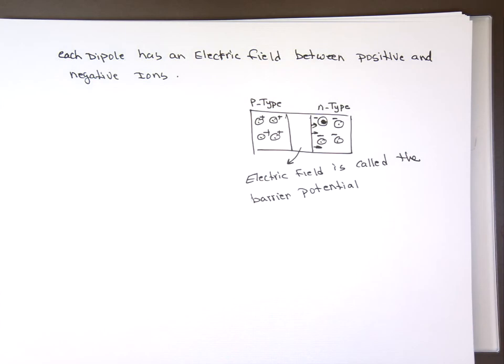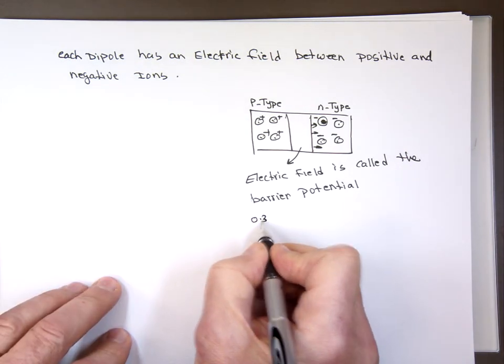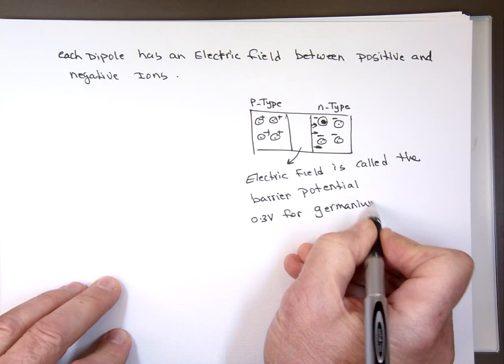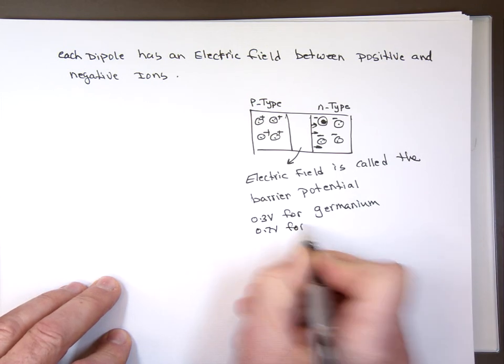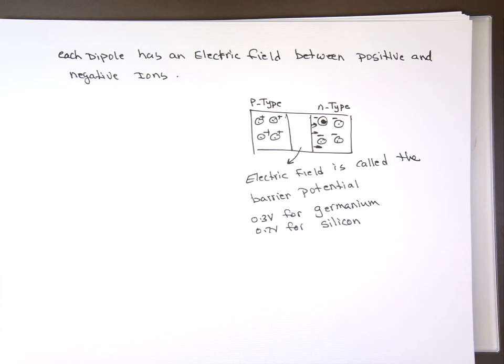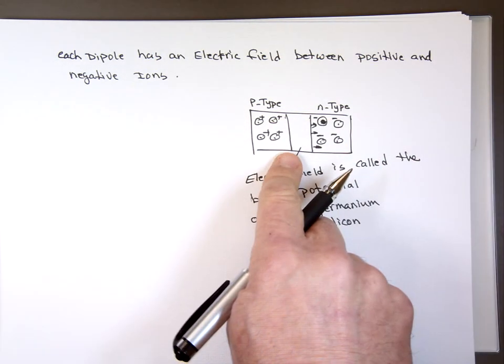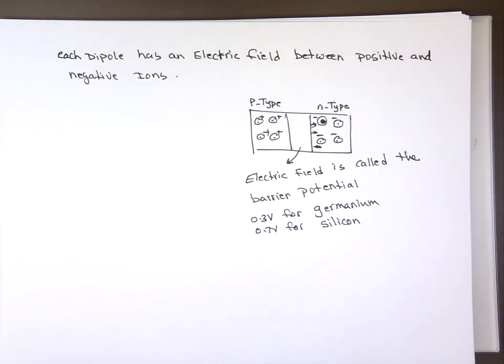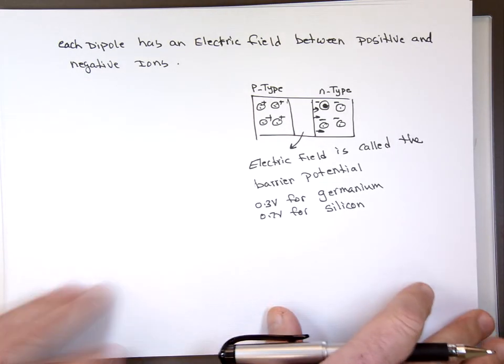This barrier potential field is approximately 0.3 volts for germanium and approximately 0.7 volts for silicon. There's a field pushing back — the electron can't enter. It's 0.7 volts right there, pushing these electrons and holes back. So if you want current to actually travel through this diode, that takes us to something called forward bias.